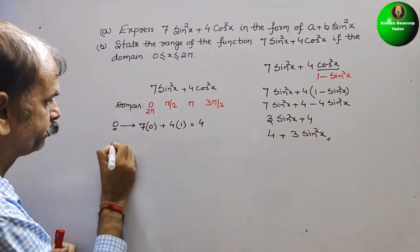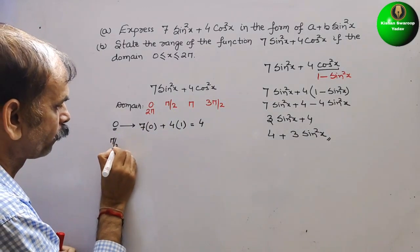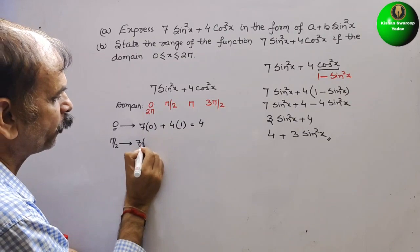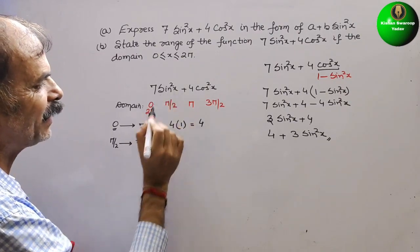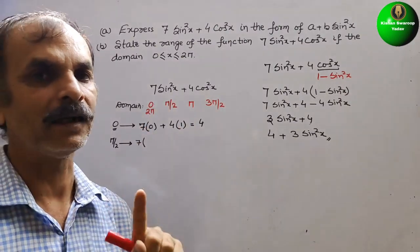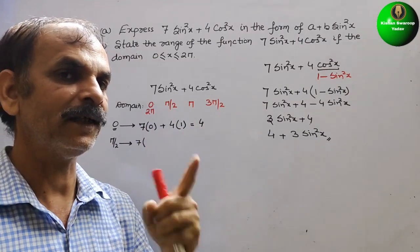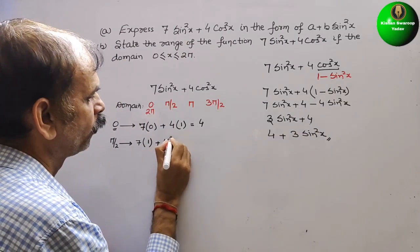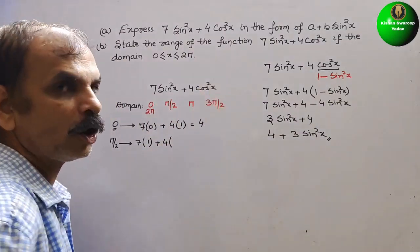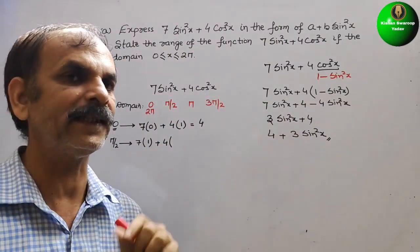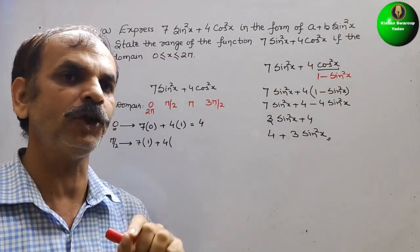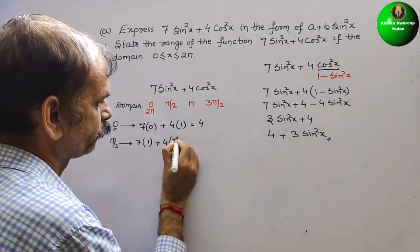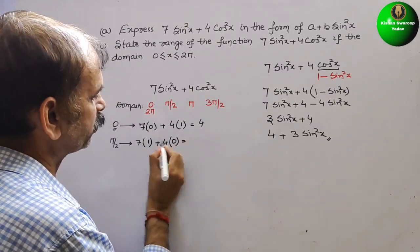At x = π/2: sin(π/2) = 1, so sin²(π/2) = 1. And cos(π/2) = 0, so cos²(π/2) = 0. Therefore: 7(1) + 4(0) = 7. So f(π/2) = 7.